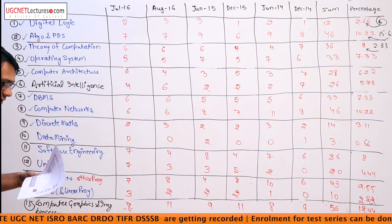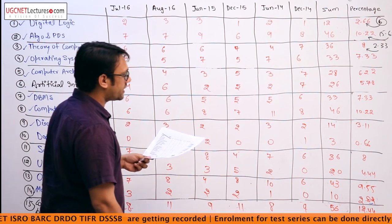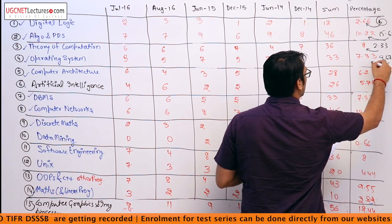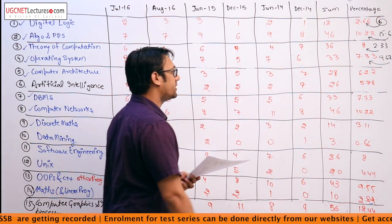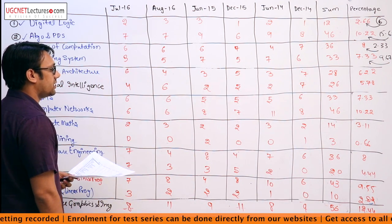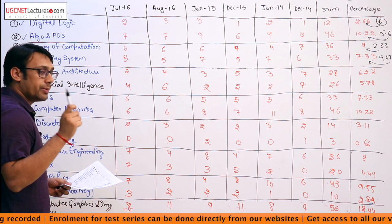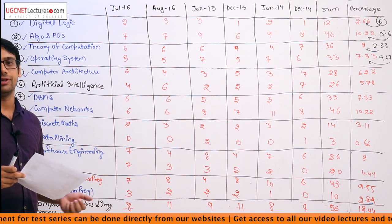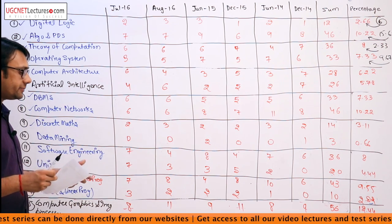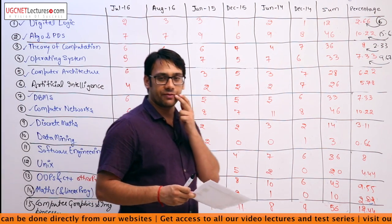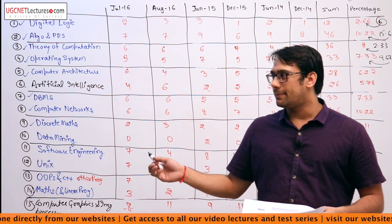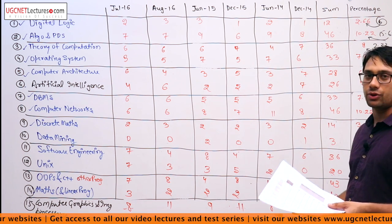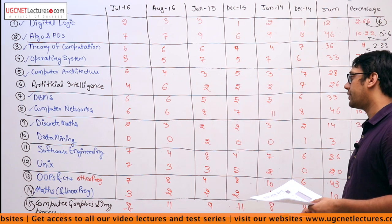The next subject is operating system. Previously, operating system was contributing 9.67%, now it is contributing 7.33%. Remember, in this examination we have a total of 75 questions. In Paper 2 of UGC NET Examination, we were having 40 questions, while in Paper 3 we will be having 75 questions. So obviously the number of questions is going to increase.